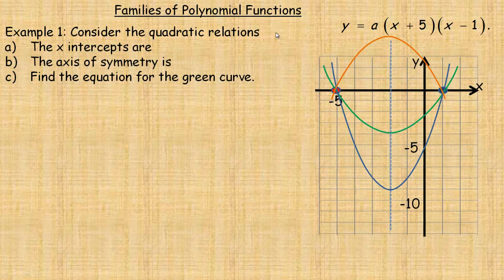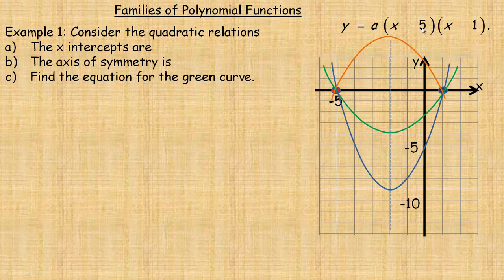In the first example, we're asked to consider the quadratic relations y equals a times (x plus 5)(x minus 1). There are two different factors here, and each factor produces an x-intercept or root. If we set x plus 5 to zero, we get negative 5.